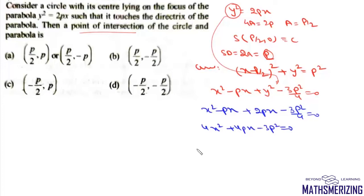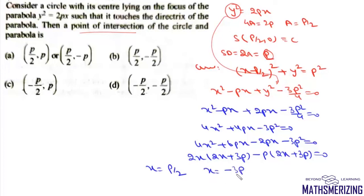I can write it as 4x² + 6px - 2px - 3p² = 0. I'll take 2x common, so there will be 2x + 3p, and then I'll take p common, so I'll get 2x + 3p = 0. So x is p/2 or x is -3p/2.